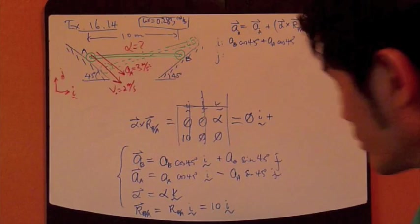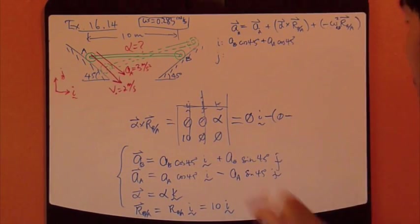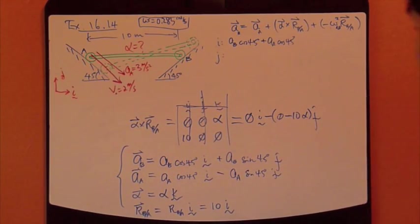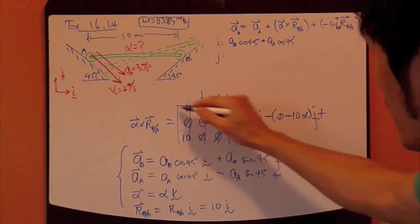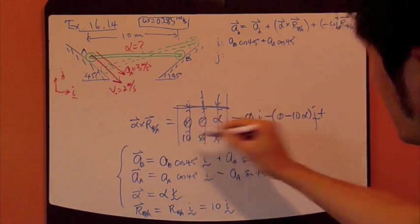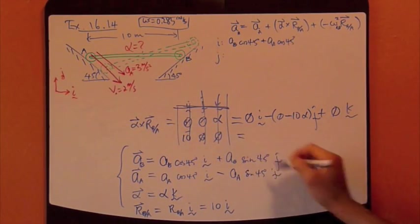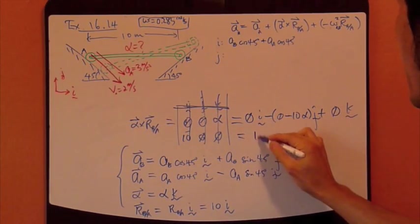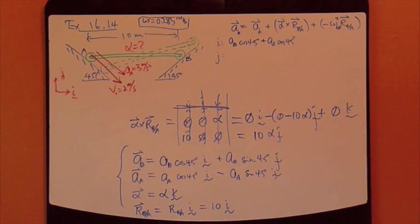So that's 10I is 0, and then minus 10 alpha J, and then plus, cross out the K, so you have 0, and then 0, so K component is 0. So only the J component is 5, and 0, negative, negative composite, so that's 10 alpha J.